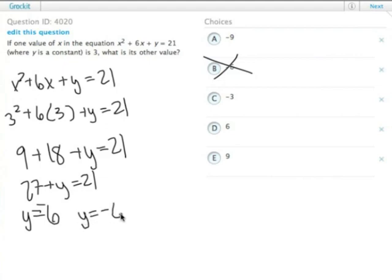Let's rewrite that. y equals negative 6. So now we know that the actual equation is x² + 6x - 6 = 21.